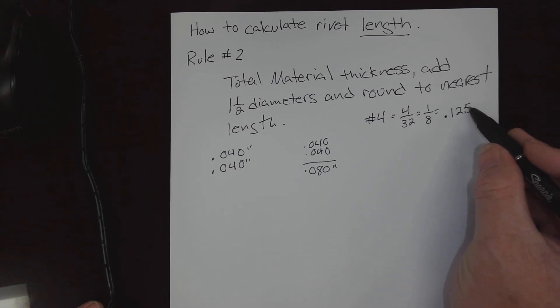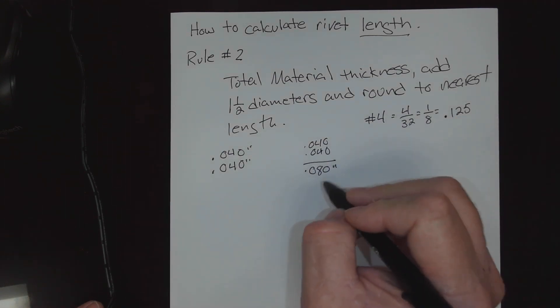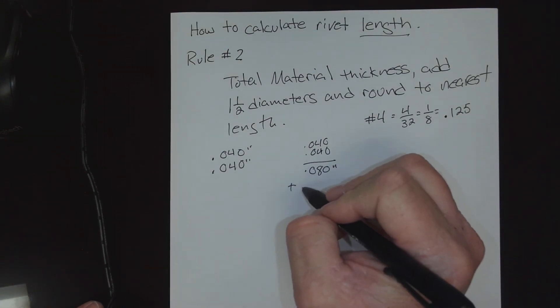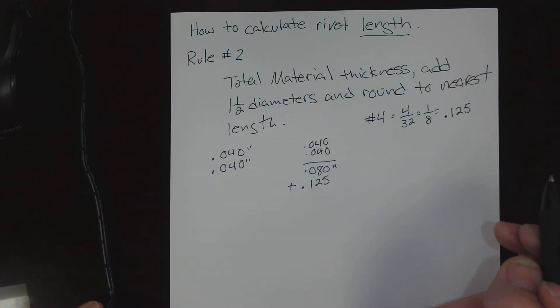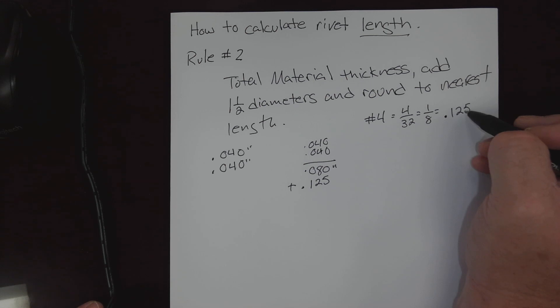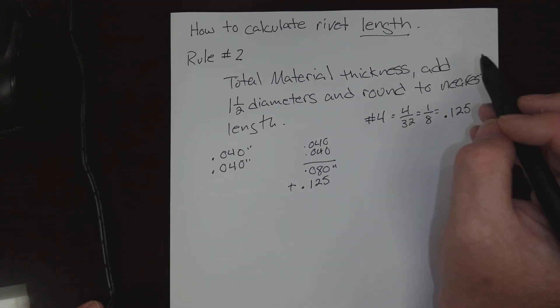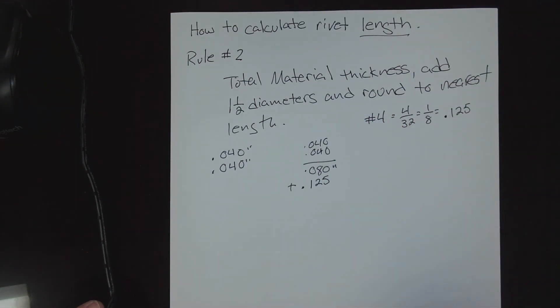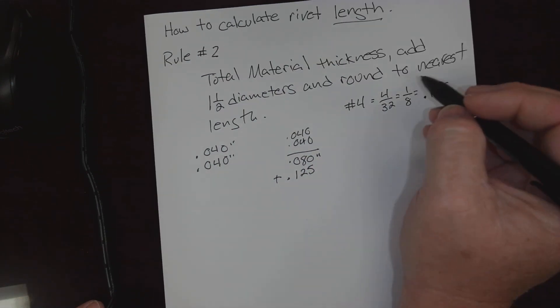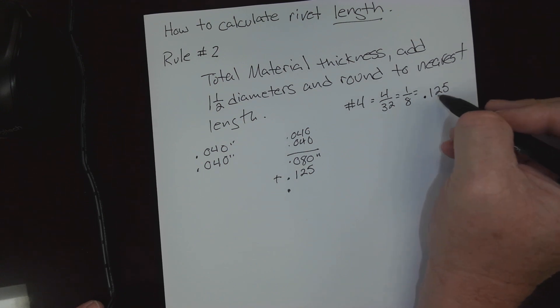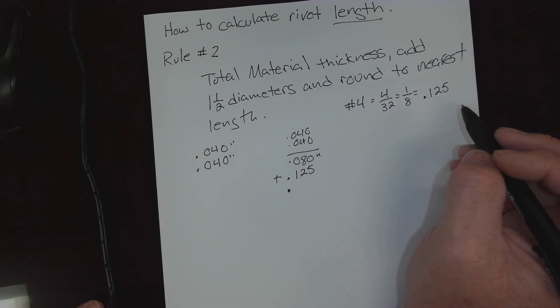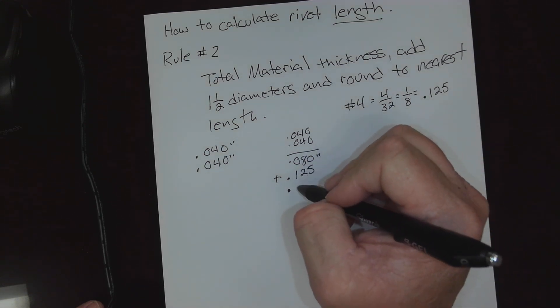So here's what we could do: we could add this to our 80 thousandths, and that would account for one diameter. But the rule states one and a half diameters, so we would also need to come back and add a half of this Number 4, which if we took half of 0.125, that would be 0.0625.